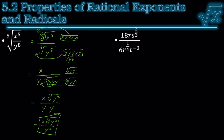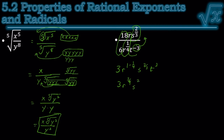Lastly, we need to do one of these — just division with a whole bunch of different things. Divide like terms: 18 divided by 6 is 3. Then we have the r's — we're dividing so subtract the exponents. Then s's, and the negative exponent on the t means reciprocal. For the r: 1 minus 1 fourth is 3 fourths. All the exponents are different; all the bases are different — that's as simple as we can make it.